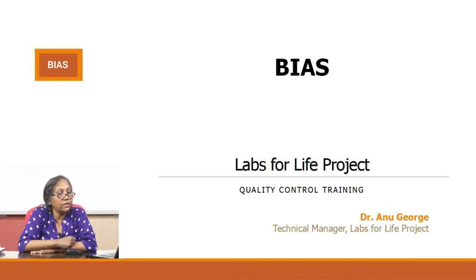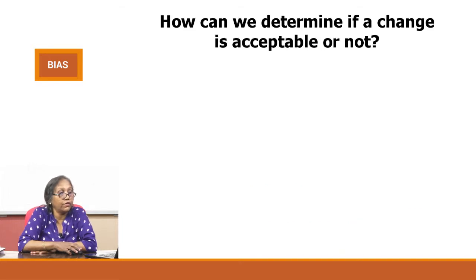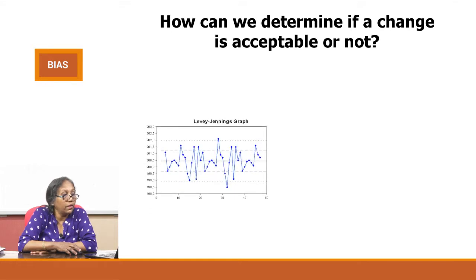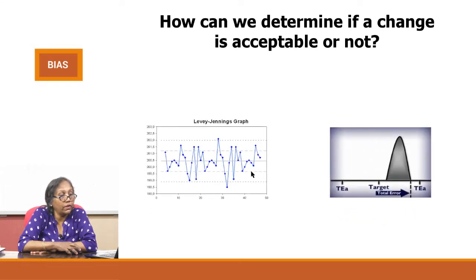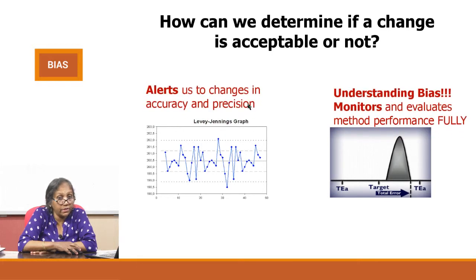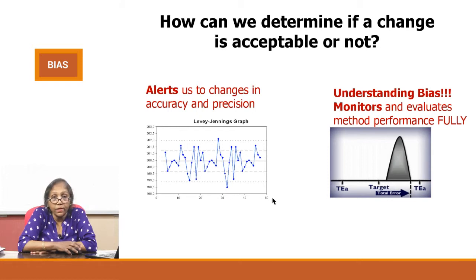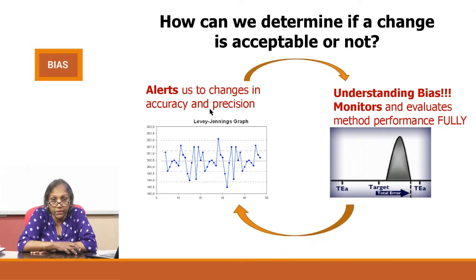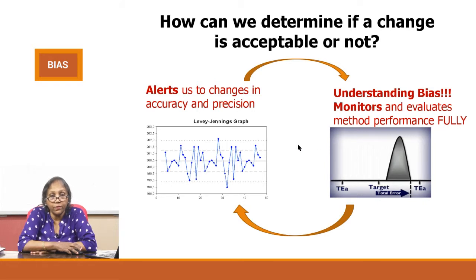So, we are going to start with bias. What is bias? How can we determine if a change is acceptable or not? Up until now, we were talking about the Levey-Jennings chart which alerts us to any changes in accuracy and precision. But there is an additional aspect — the understanding of bias — which together with the LJ will monitor and evaluate the full method performance. LJ alone may not be enough.